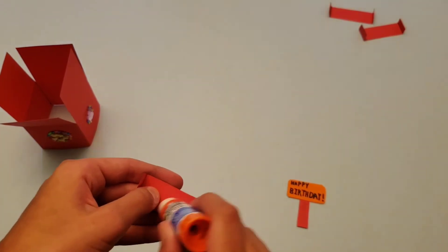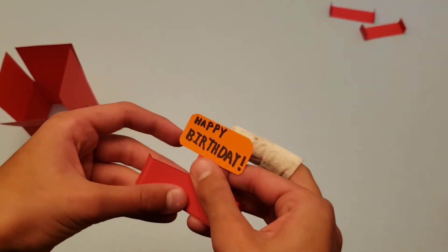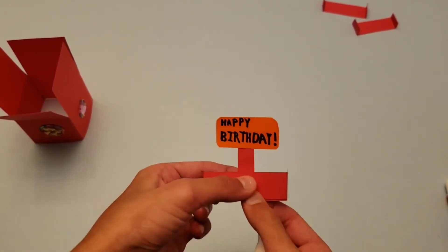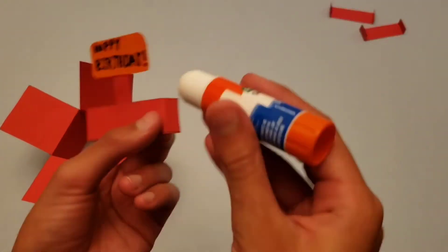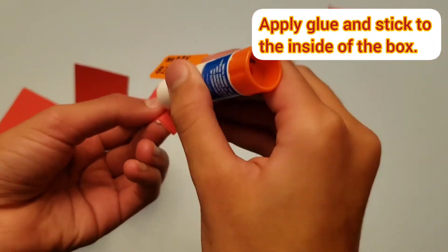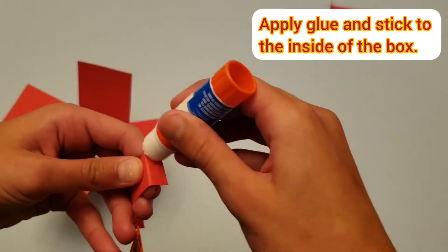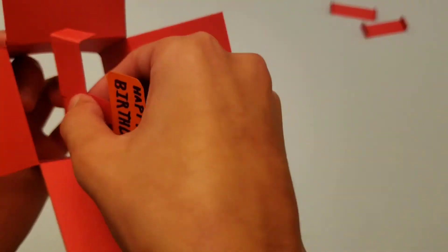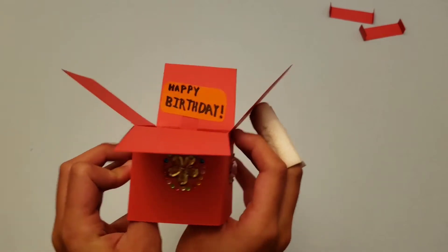Now glue your small sign to the back of the paper strips that we used earlier. Now put some glue on the ends of your piece of paper, and attach them into the gift box from the inside. Press it down for a while to make sure that it stays attached.